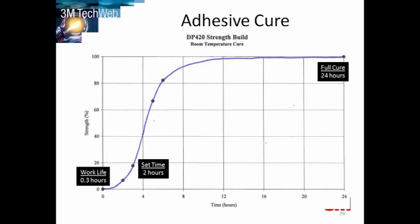Set time is the time needed for the parts to be clamped together and set before they can be handled. Full cure is the time required for the adhesive to reach full strength and its final properties. An understanding of this is very important. So if you have high production rates or you have large panels, balancing of these properties is very important.